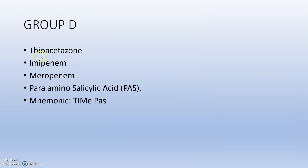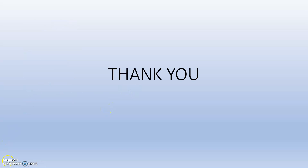Group D includes thioacetazone, imipenem, meropenem, and para-aminosalicylic acid (PAS). The mnemonic is TIME PASS: T for thioacetazone, I for imipenem, M for meropenem, E for ethionamide, and PASS for para-aminosalicylic acid. Thank you guys!